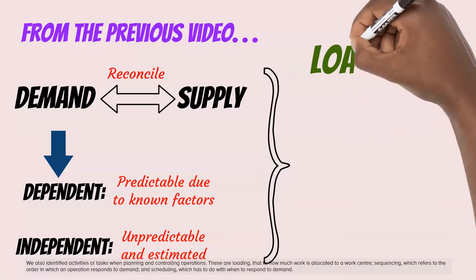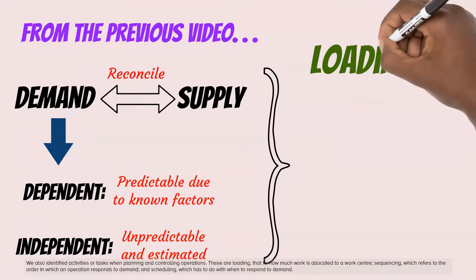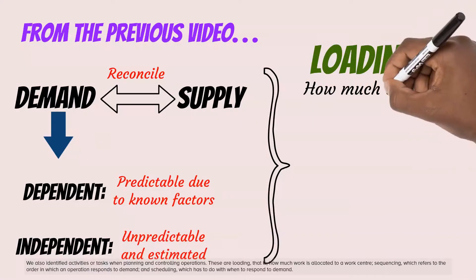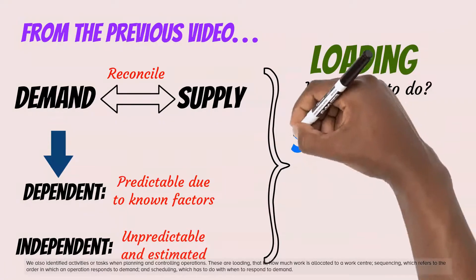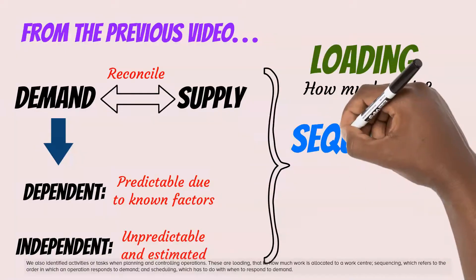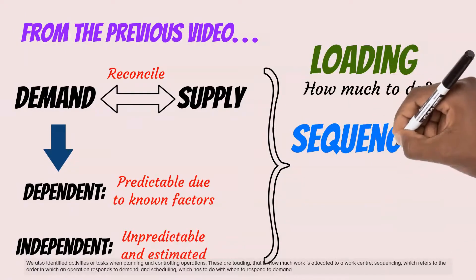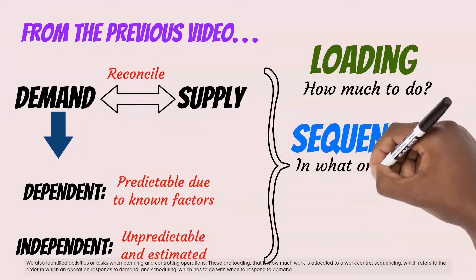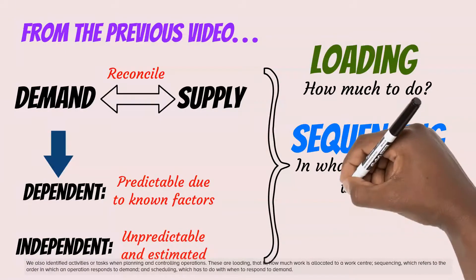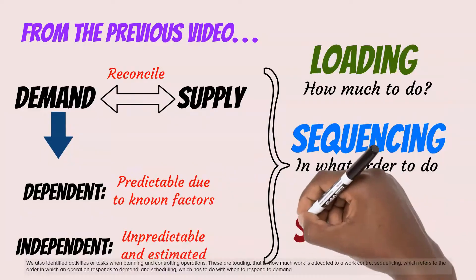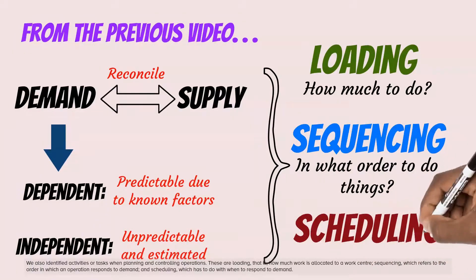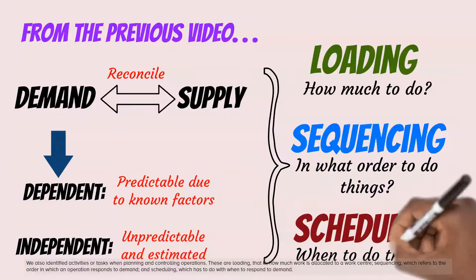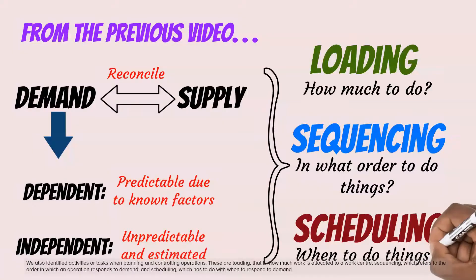We also identified activities or tasks when planning and controlling operations. These are loading — how much work is allocated to a work center — sequencing, which refers to the order in which an operation responds to demand, and scheduling, which has to do with when to respond to demand.